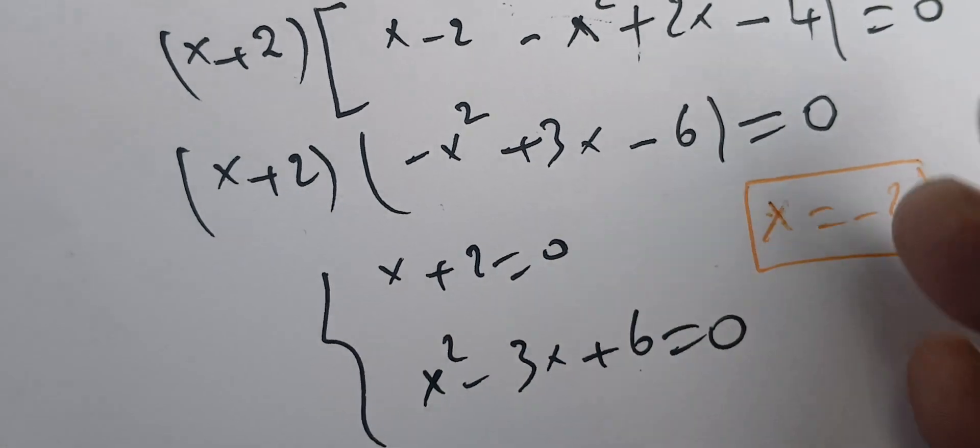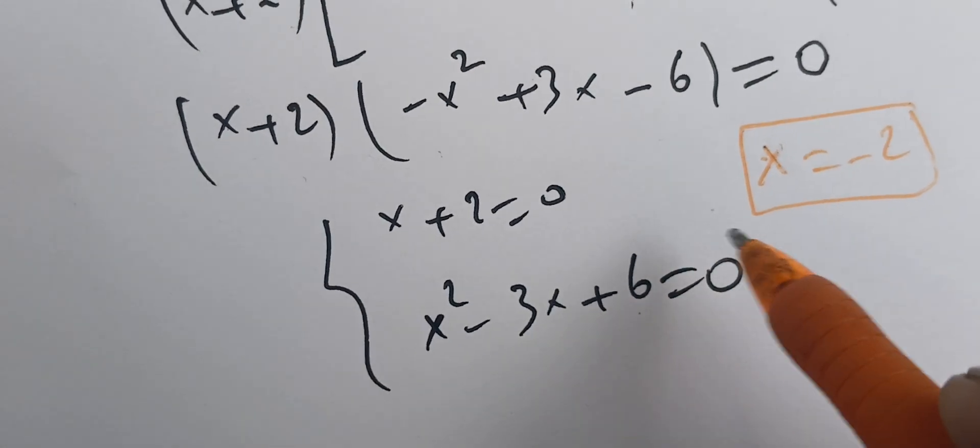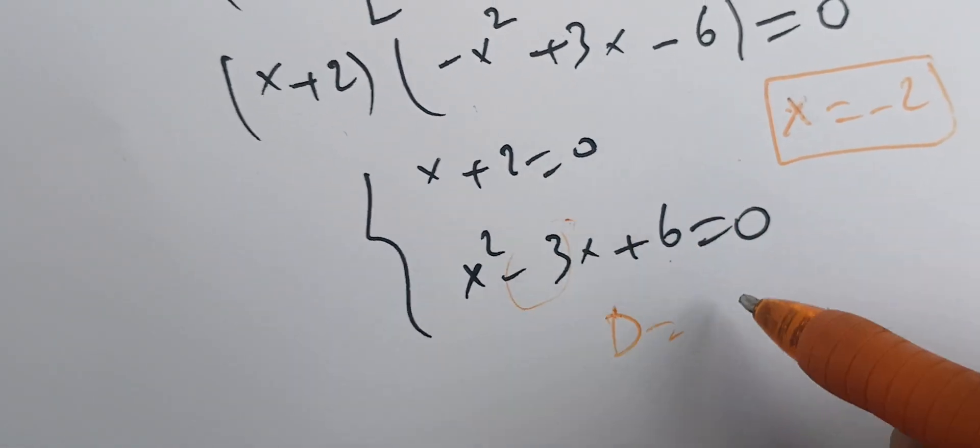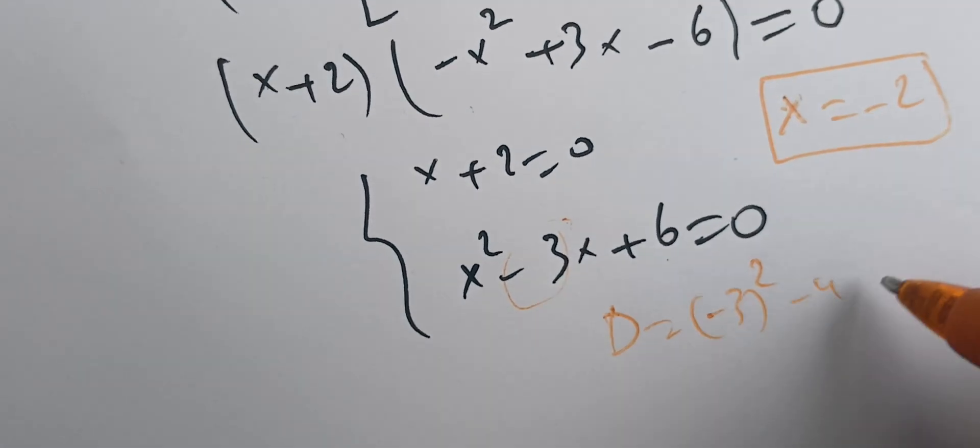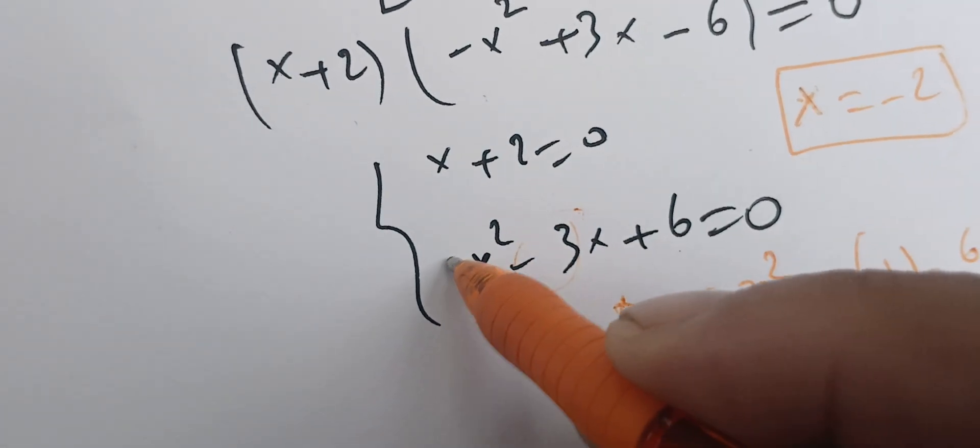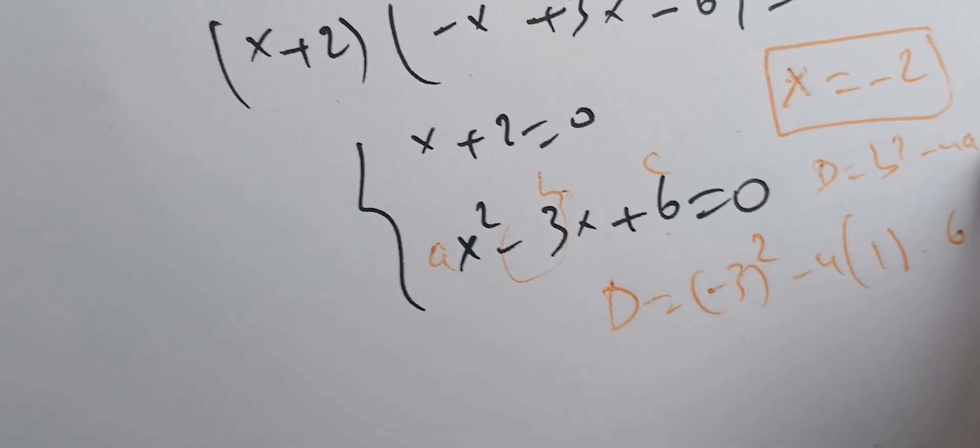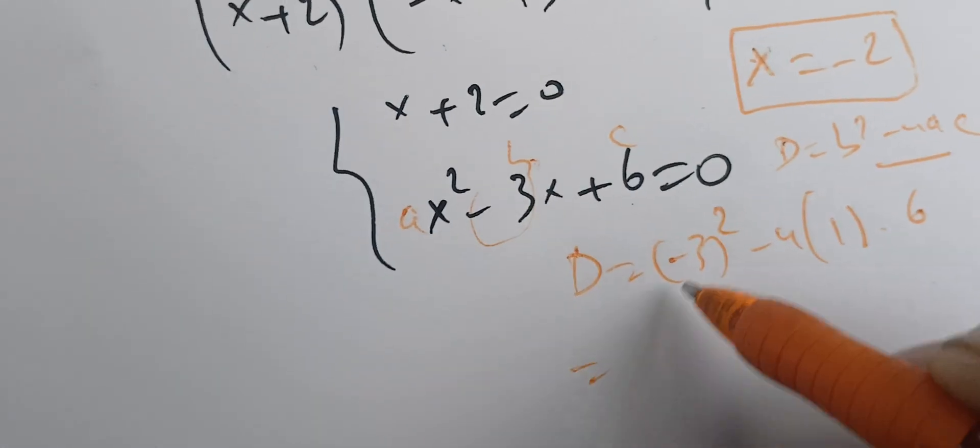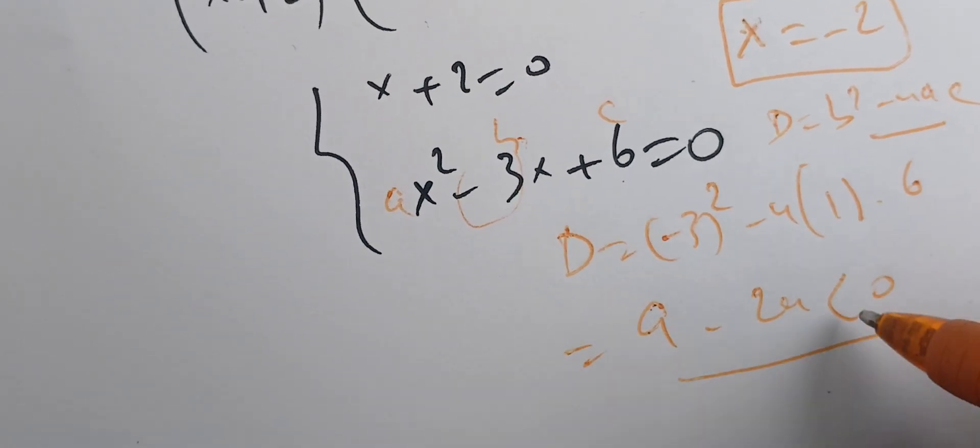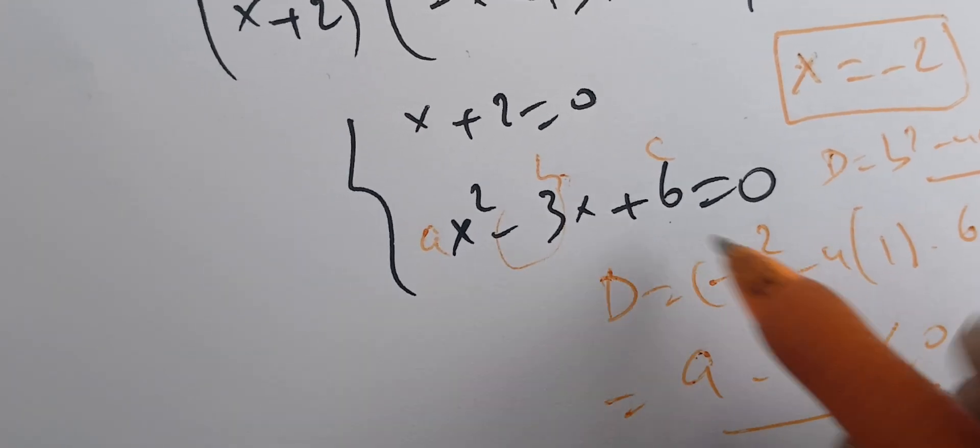Here we're going to use delta. Delta is b, which is minus 3, squared, minus 4 times 1 times 6. Delta is b squared minus 4ac. Here we have 9 minus 24, which is less than zero. This number is always less than zero, therefore this doesn't have a real solution.